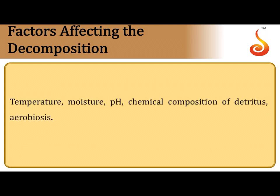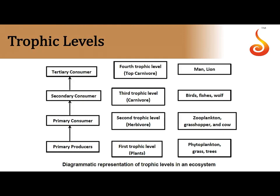Factors affecting decomposition include temperature, moisture, pH, chemical composition of the detritus, and aerobiosis. Decomposers are aerobic bacteria that require oxygen to break down complex organic substances into simpler inorganic substances.